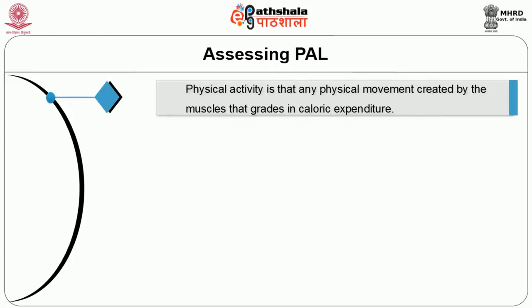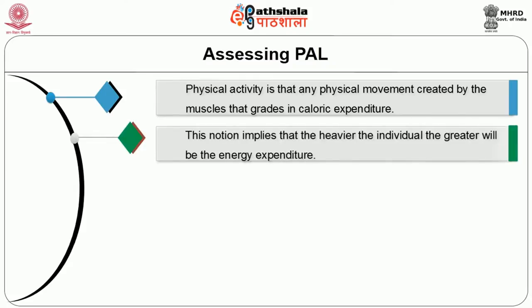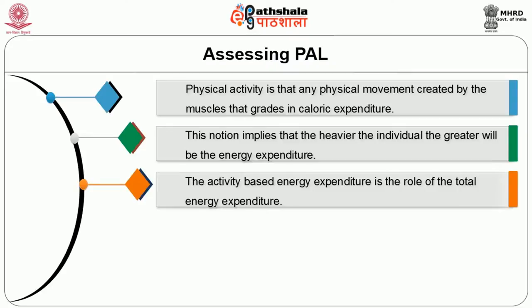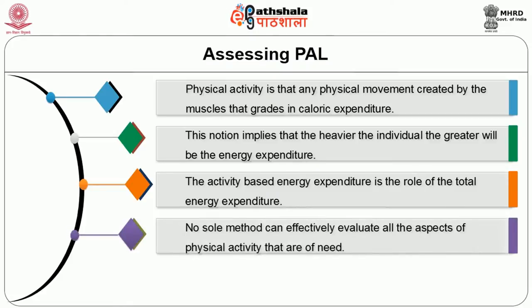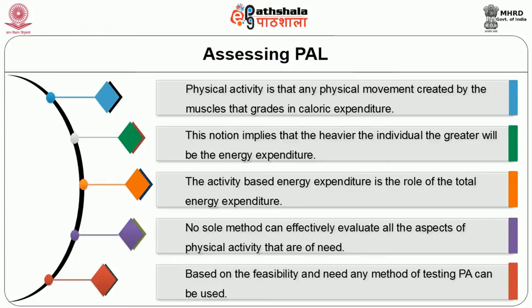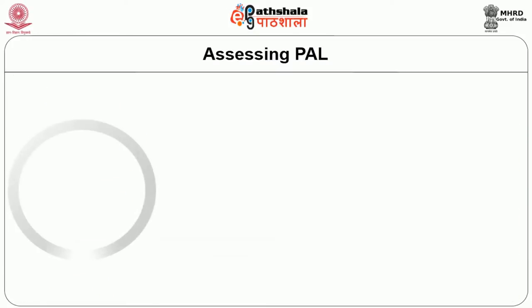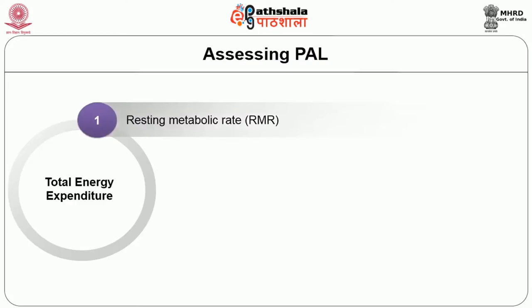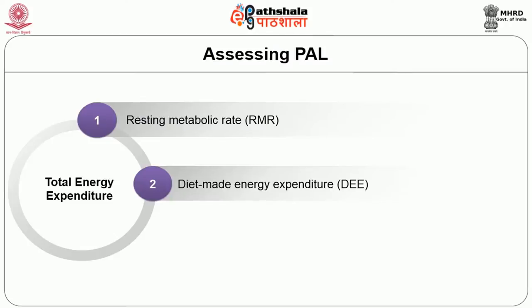Physical activity involves any physical movement that generates caloric expenditure — the heavier the individual, the greater the energy expenditure. No single method can effectively evaluate all aspects of physical activity. Total energy expenditure is separated into three components: resting metabolic rate (RMR), diet-induced energy expenditure (DEE), and muscular activity expressed as activity energy expenditure (AEE).